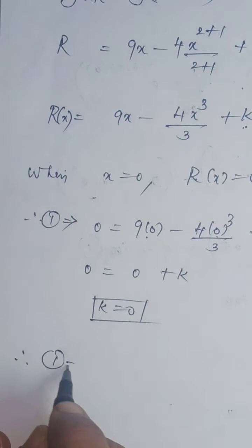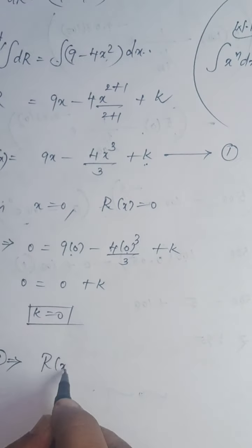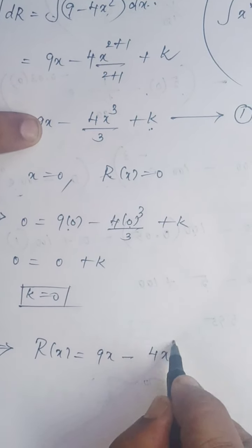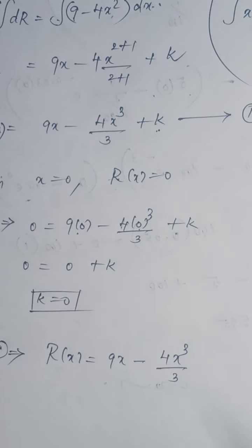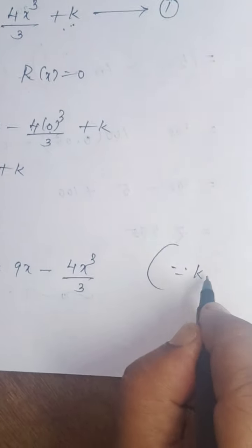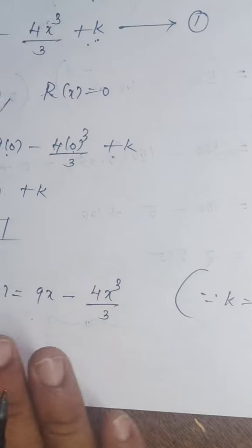Therefore equation 1 implies R(x) = 9x - 4x³/3 + k. What is the value of k? 0. We got the revenue, but you are asked to find the demand function.